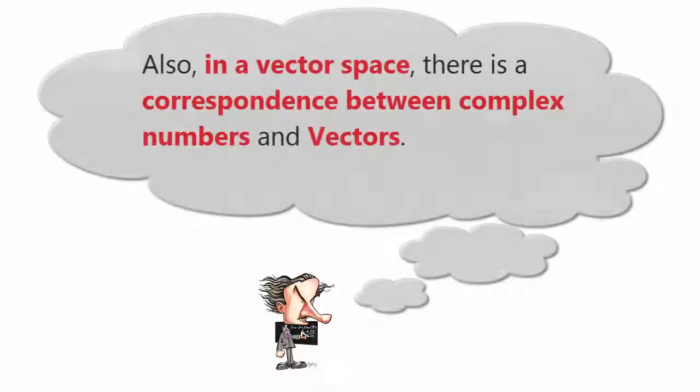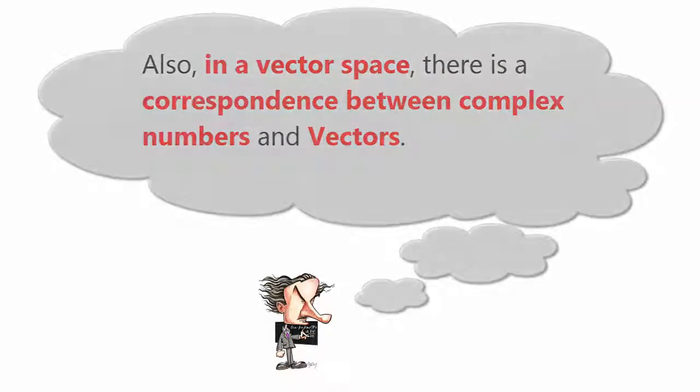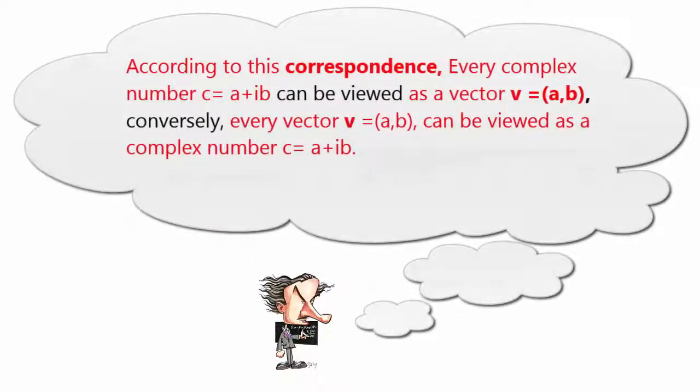Also, in a vector space, there is a correspondence between complex numbers and vectors. According to this correspondence, every complex number C equals A plus iB can be viewed as a vector V equals (A, B).